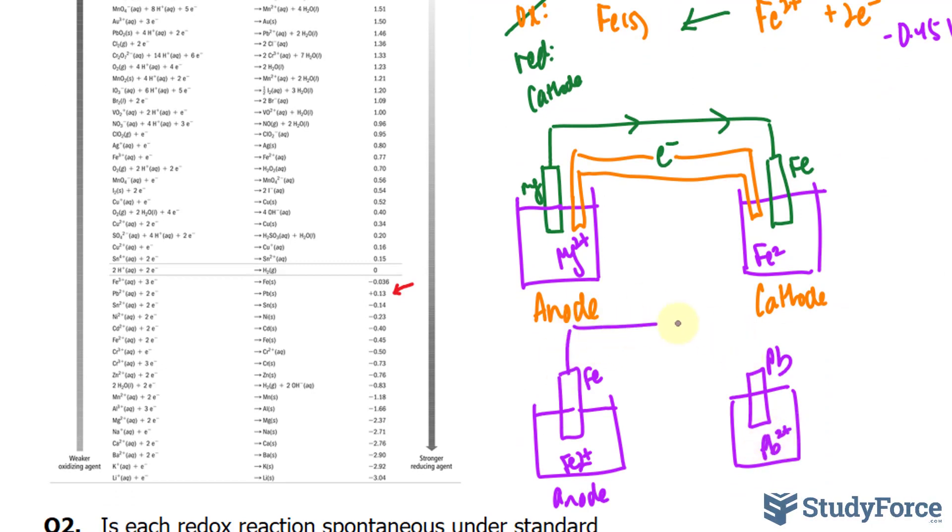The electrons flow from the anode to the cathode, and we have a salt bridge connecting the two solutions. I'll also write down cathode here for clarity's sake. And there you have it.